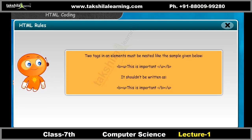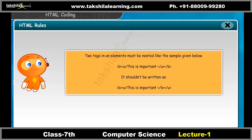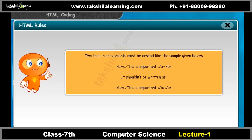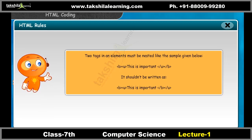Correct nesting example: &lt;b&gt;&lt;u&gt;this is important&lt;/u&gt;&lt;/b&gt;. It should not be written as: &lt;b&gt;&lt;u&gt;this is important&lt;/b&gt;&lt;/u&gt;.